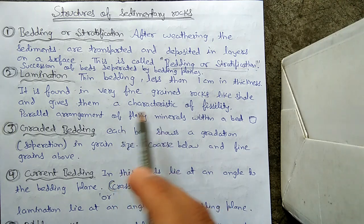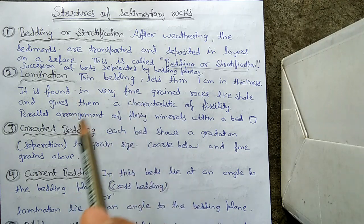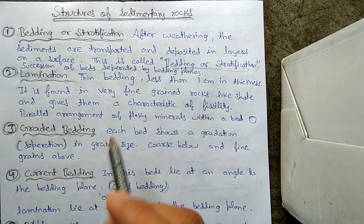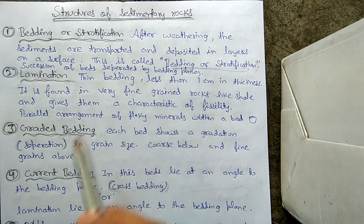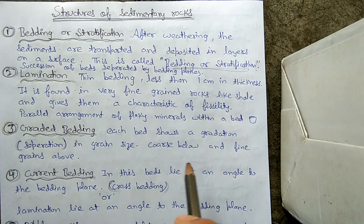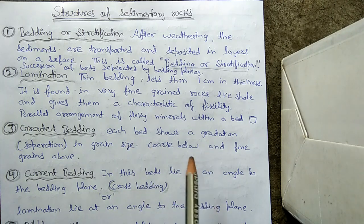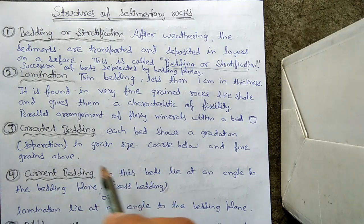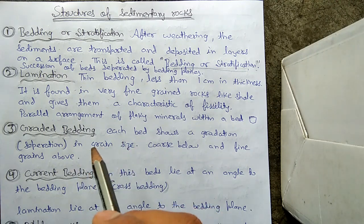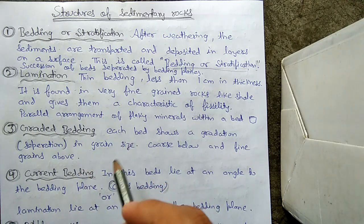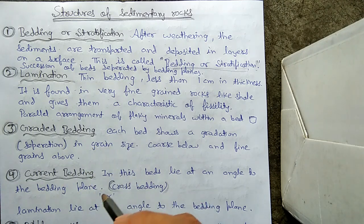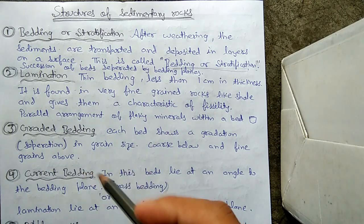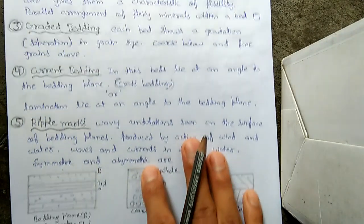The third structure is graded bedding. Each bed shows a gradation in grain size. Coarse grains are found below and fine grains are found above. Graded bedding means a difference in size of the grains — coarse grains are arranged below and fine grains are arranged above.